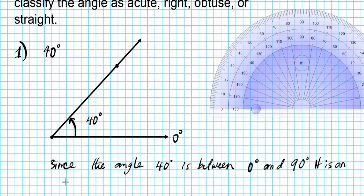Since the angle 40 degrees is between 0 degrees and 90 degrees, it is an acute angle. Any angle that's between 0 and 90 degrees is known as an acute angle.